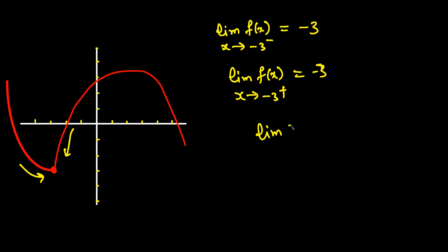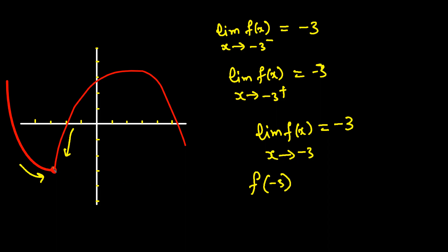The limit of the function as x approaches negative 3 from either side is equal to negative 3. The value of the function at negative 3 is also negative 3, from the closed circle. That's how you find the limit of a function from the graph. Thanks for watching — please share and subscribe to the channel, and have a good day!